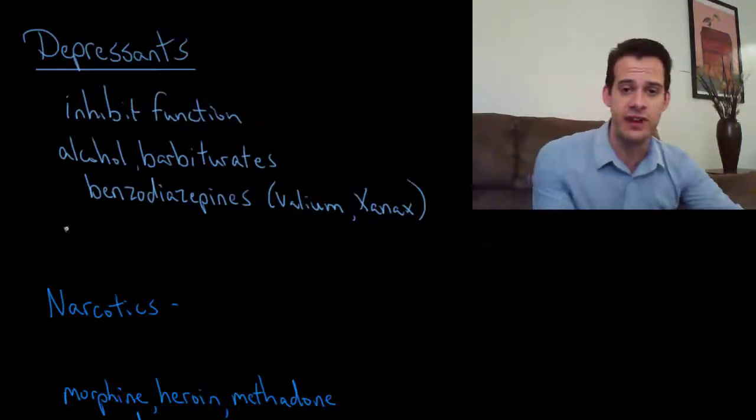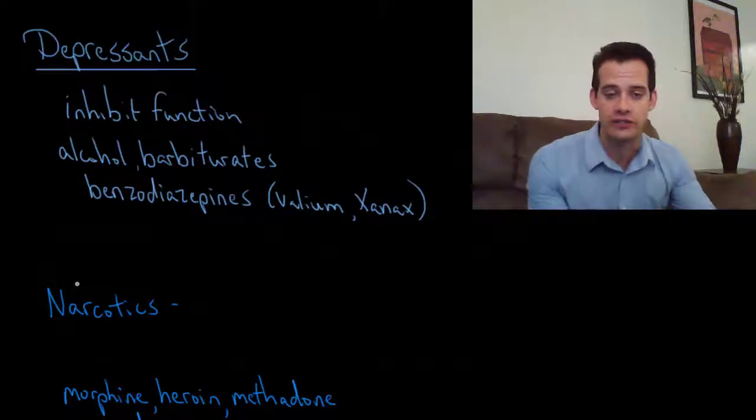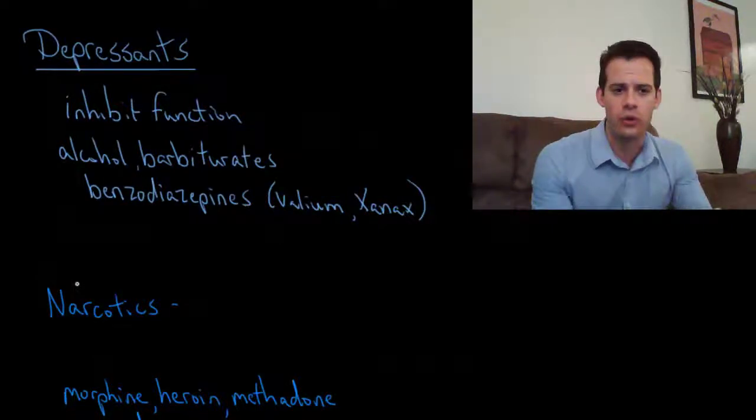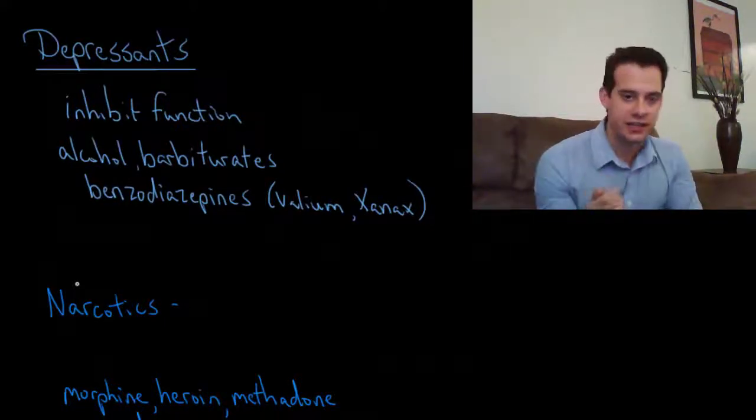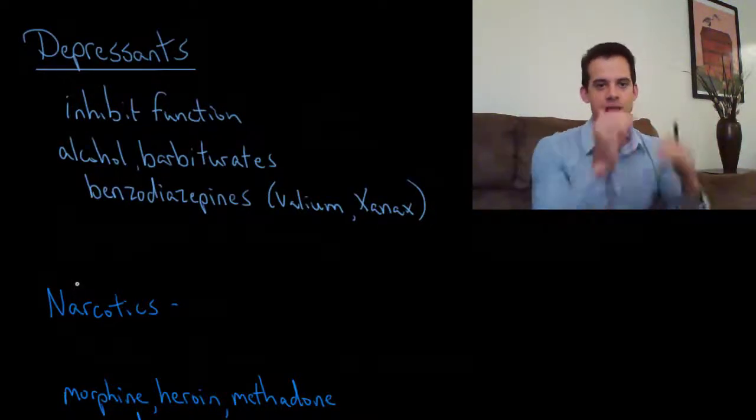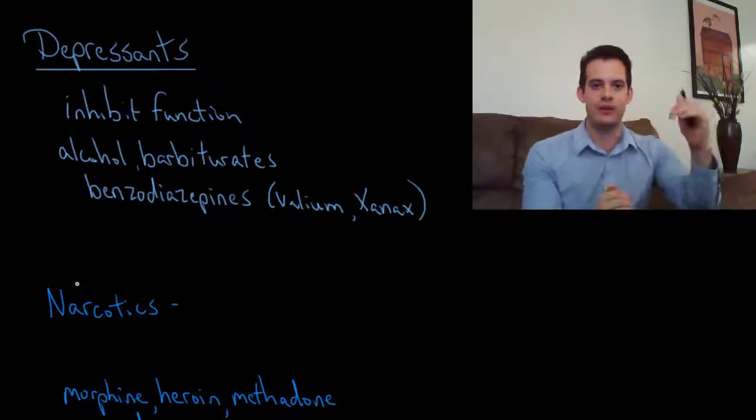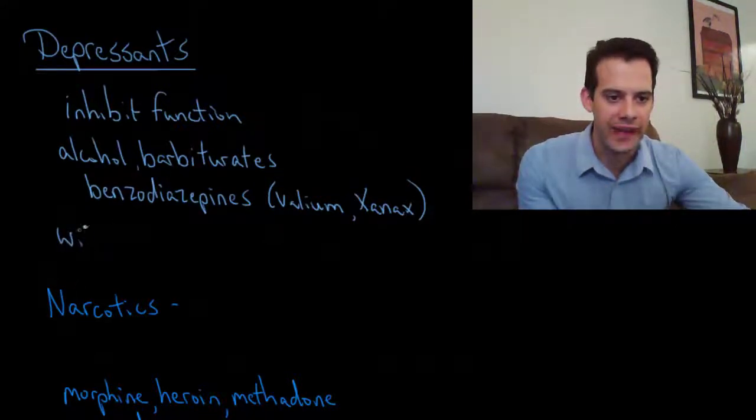I talked in the previous video about this idea of neuroadaptation—the idea that the body responds to drugs and tries to counteract the effects of those drugs. In the case of alcohol, what we're doing is decreasing the functioning, reducing the stimulation of the nervous system, and the body responds to this by increasing it. It's trying to balance it back out, trying to get it to a normal level of function.